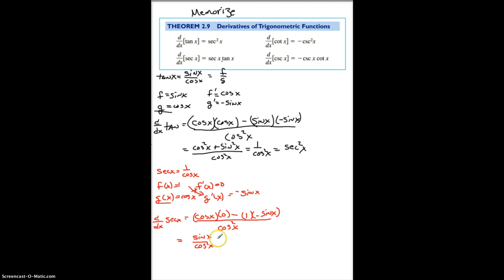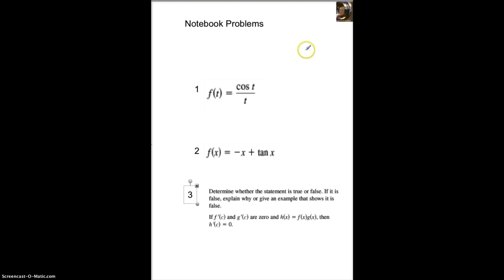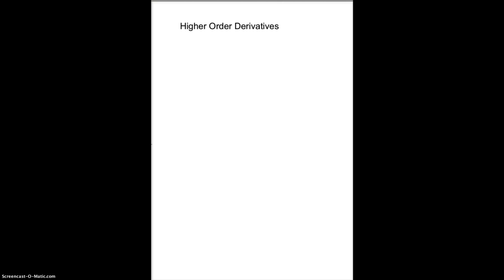Now, it's just a little bit of algebra to rewrite this as sine over cosine times 1 over cosine. So, this becomes tangent times secant. All right, your turn. When you're done, turn the video back on.